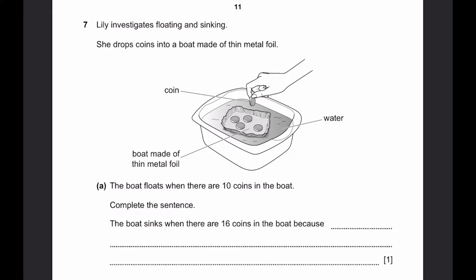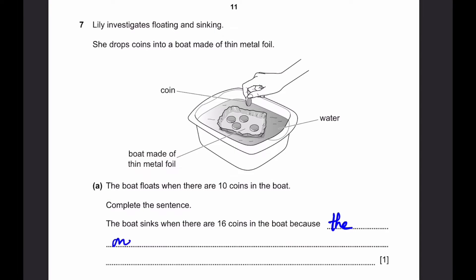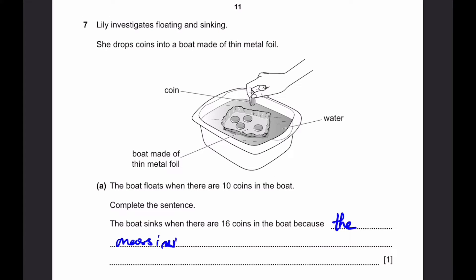Question 7. Lily investigates floating and sinking. She drops coins into a boat made of thin metal foil. Part A: the boat floats when there are 10 coins in the boat. Complete the sentence: the boat sinks when there are 16 coins because — since 16 is greater than 10, we're adding 6 more coins, which means the mass increases inside the boat. Therefore the boat sinks. The boat sinks when there are 16 coins in the boat because the mass inside the boat increases.